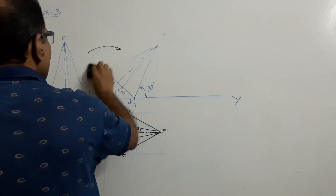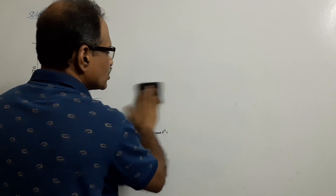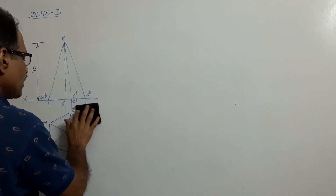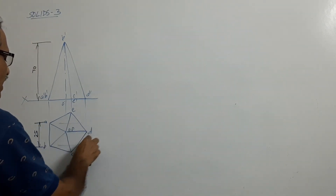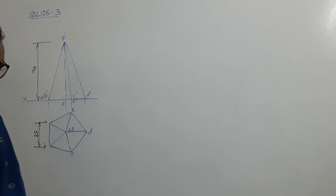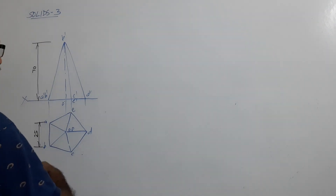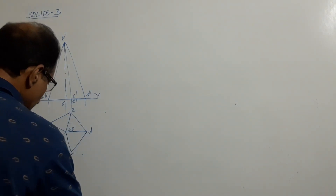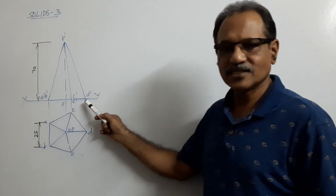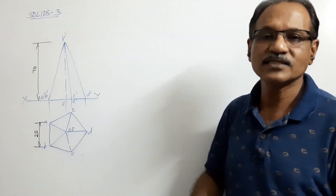In the auxiliary projection method, instead of tilting the object to the final position, we tilt the HP. When you tilt HP you will have a new XY line called X1Y1, as seen in Video 2. The new X1Y1 is drawn through D dash so that the angle between D dash P dash — which is the slant edge — and the new X1Y1 is 70 degrees.